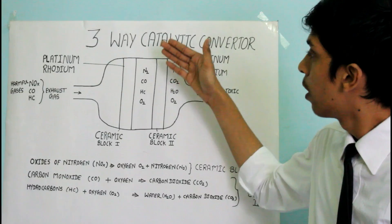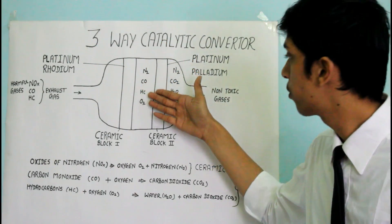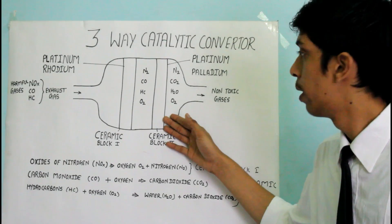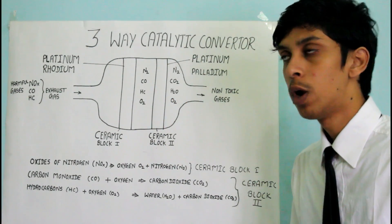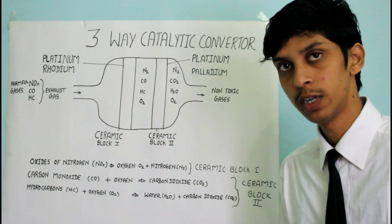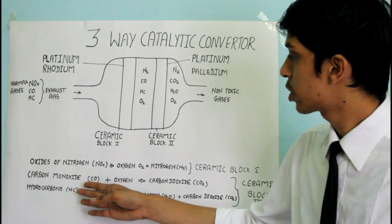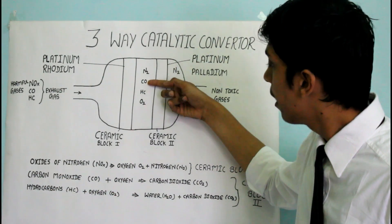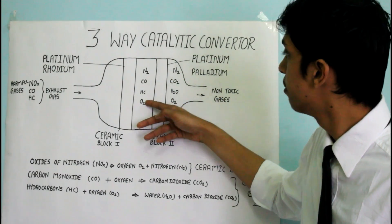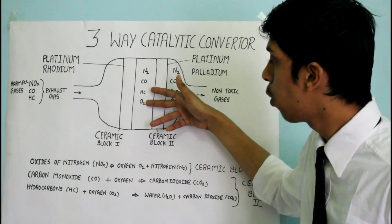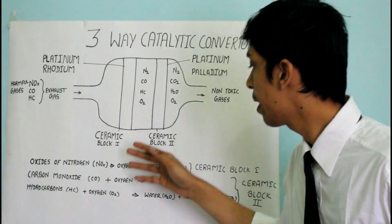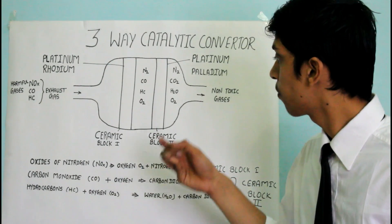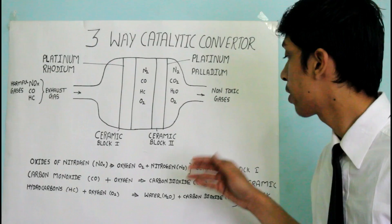After ceramic block one, we have nitrogen atoms, carbon monoxide, hydrocarbons, and oxygen atoms. These gases are then sent to ceramic block two. In ceramic block two, carbon monoxide and hydrocarbons are converted into less harmful gases. First, the carbon monoxide is mixed with the oxygen atoms.